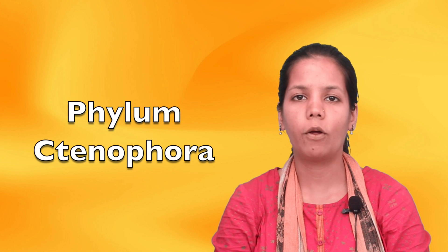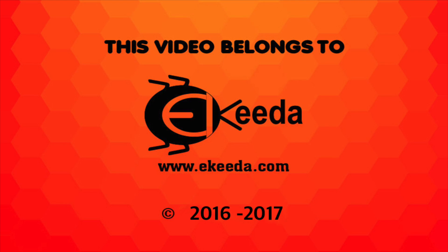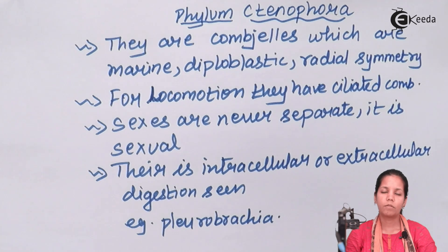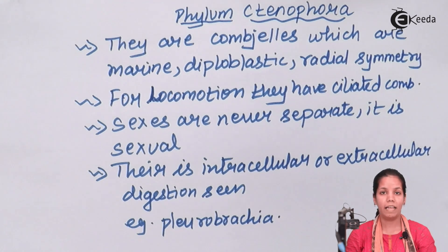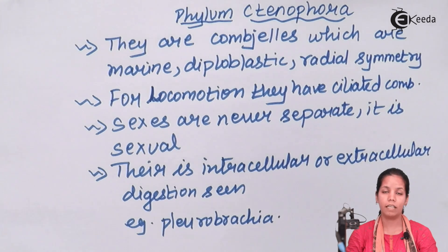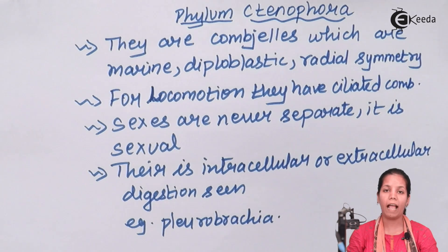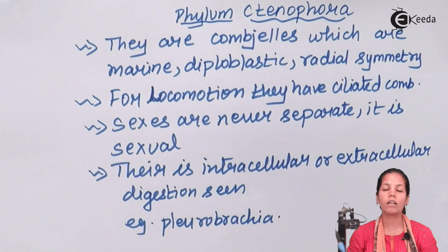Ctenophora are aquatic organisms that have some features which are quite distinct from other phylums. The organisms that belong to this phylum are basically umbrella-shaped or U-shaped. They are free swimmers in nature, mostly aquatic, and digestion is both intracellular as well as extracellular depending upon the requirement of that particular organism.